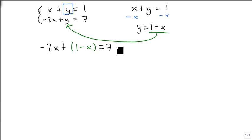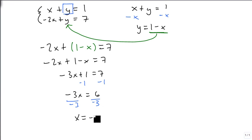So now I have a single equation with just an x in it. Now let's get rid of the parentheses, combine like terms, subtract 1 from both sides. So minus 3x equals 6, or x equals minus 2.